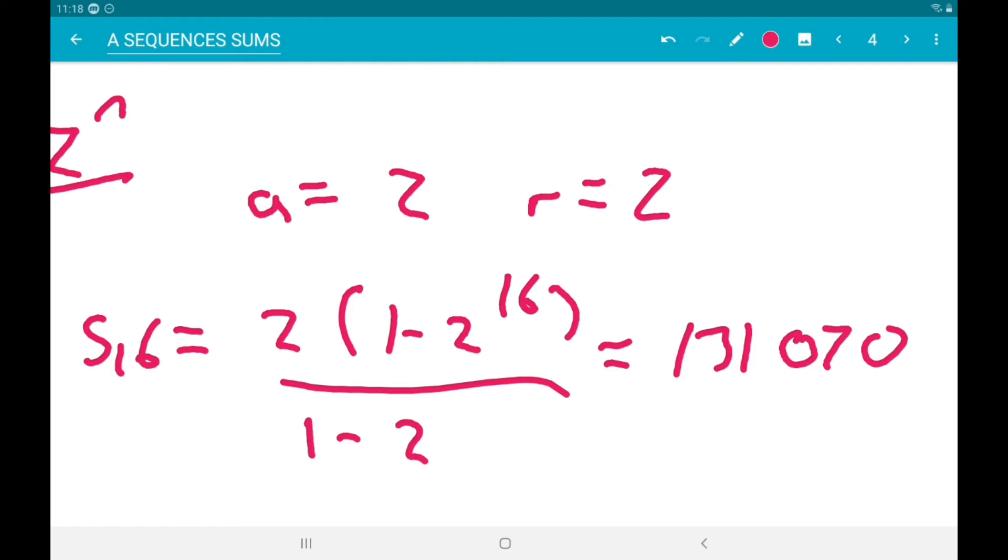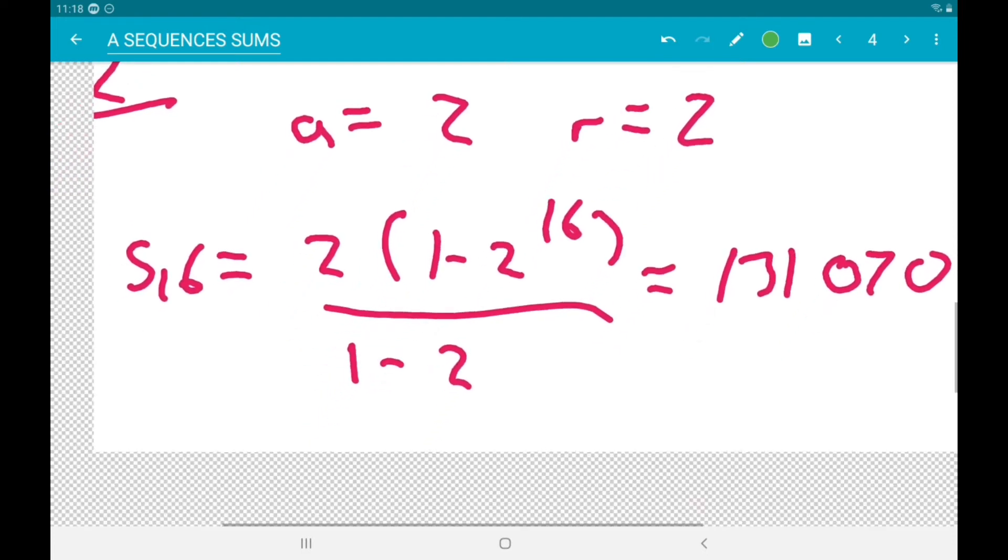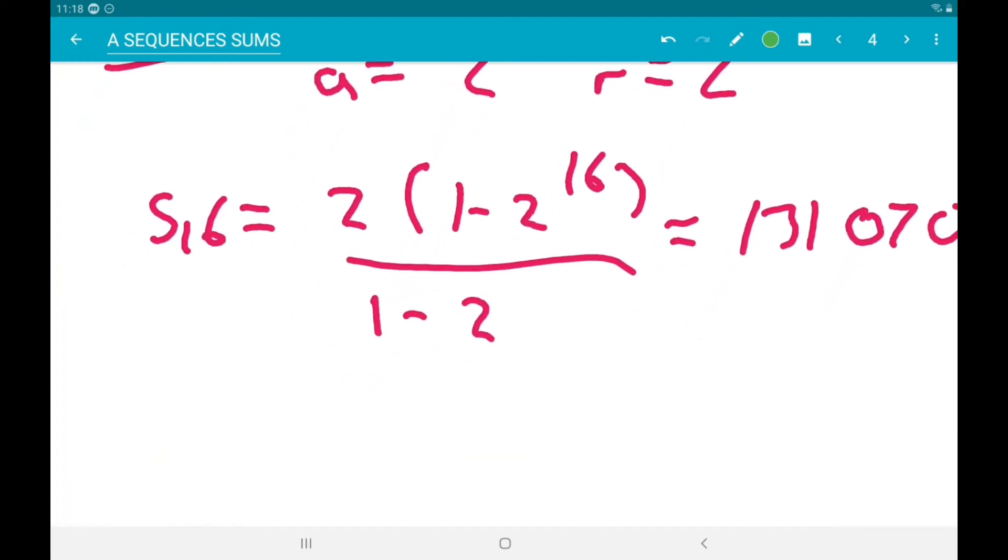So we then just need to add both sums together, so 131,070 plus 728 is indeed 131,798. Good times.